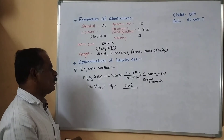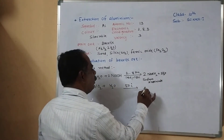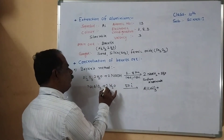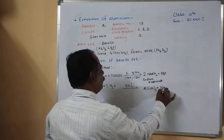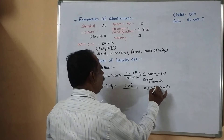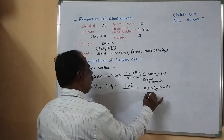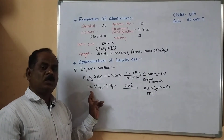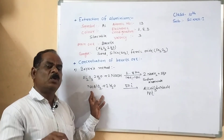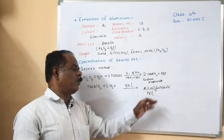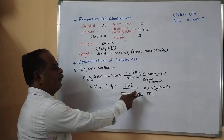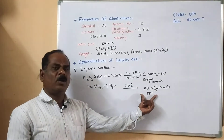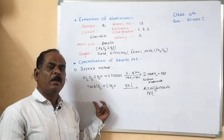The sodium aluminate filtrate is further diluted with water, warmed, and then cooled to about 50 degrees centigrade. At that point, sodium aluminate forms aluminum hydroxide Al(OH)₃ plus NaOH. A precipitate of aluminum hydroxide is formed. The sodium silicate impurity remains in the solution while the precipitate forms at the bottom. This precipitate of aluminum hydroxide is filtered and separated. Up to this point, the process is called the Bayer process.